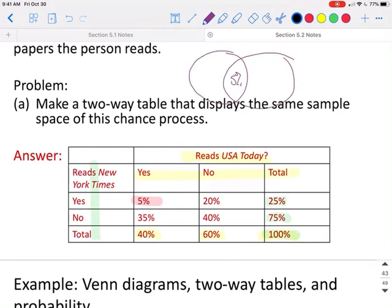We know that 5% read both. We have the New York Times, and we have USA Today. Now of the people that do read the New York Times but do not read USA Today, we are left with 20%. And of the people that do read USA Today but do not read New York Times, we're left with 35%.